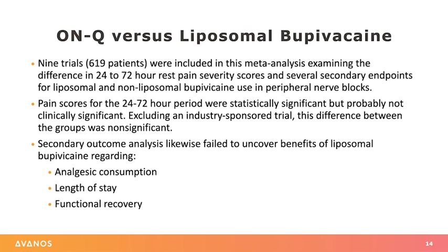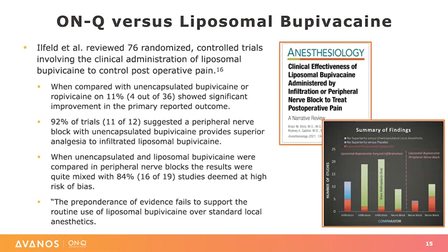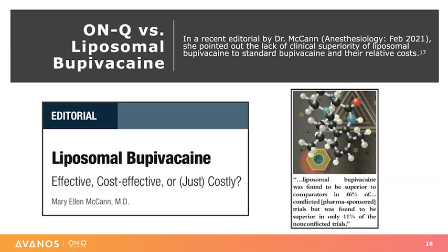A second recent study in the same edition of Anesthesiology published by Ifeld et al. reviewed 76 randomized controlled trials involving the clinical administration of liposomal bupivacaine to control postoperative pain. They found that when compared to unencapsulated bupivacaine or ropivacaine, only 11% — four out of 36 studies — showed improvement in the primary reported outcome. They also found that 92% of trials suggested a peripheral nerve block with unencapsulated bupivacaine provided superior analgesia to infiltrated liposomal bupivacaine. When unencapsulated or liposomal bupivacaine were compared in peripheral nerve blocks, results were quite mixed, with 84% of studies deemed to be high risk of bias. Their conclusion was that the preponderance of the evidence fails to support the routine use of liposomal bupivacaine over standard anesthetics.